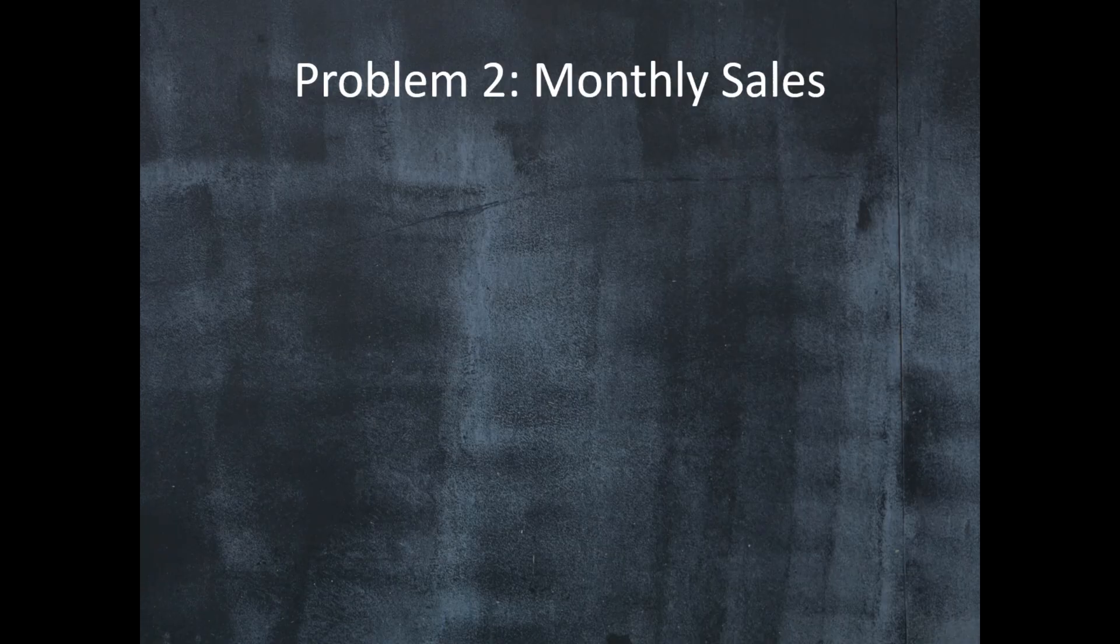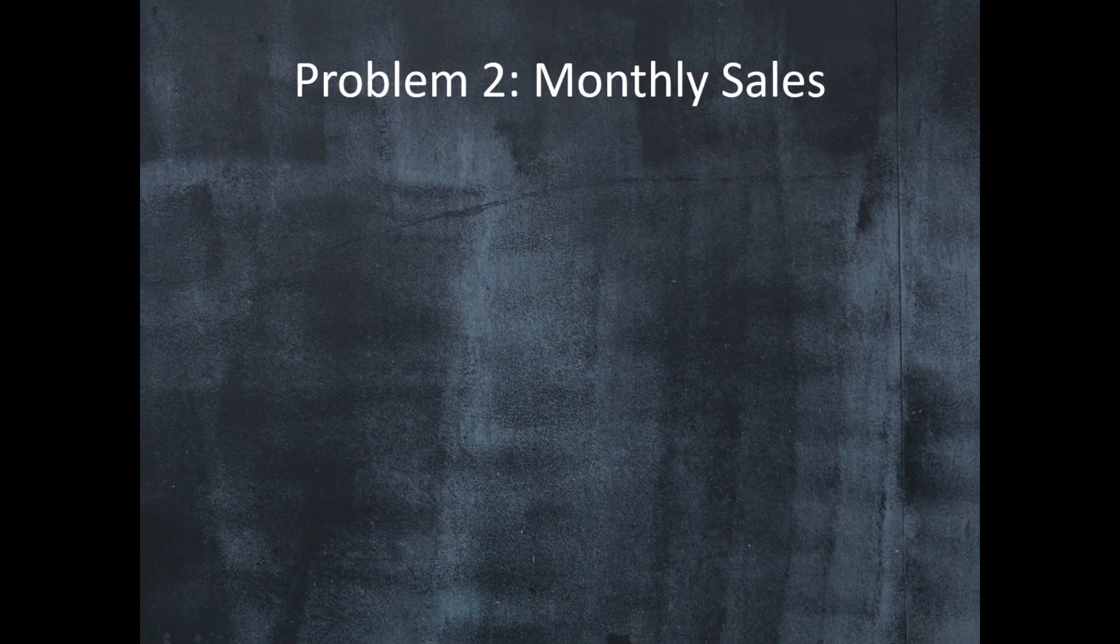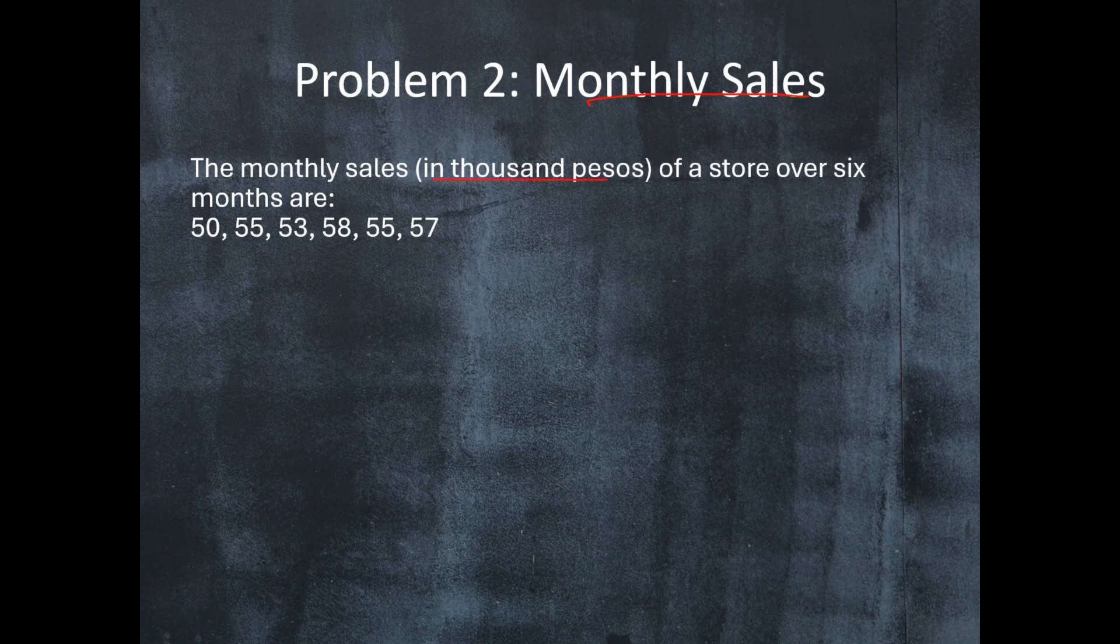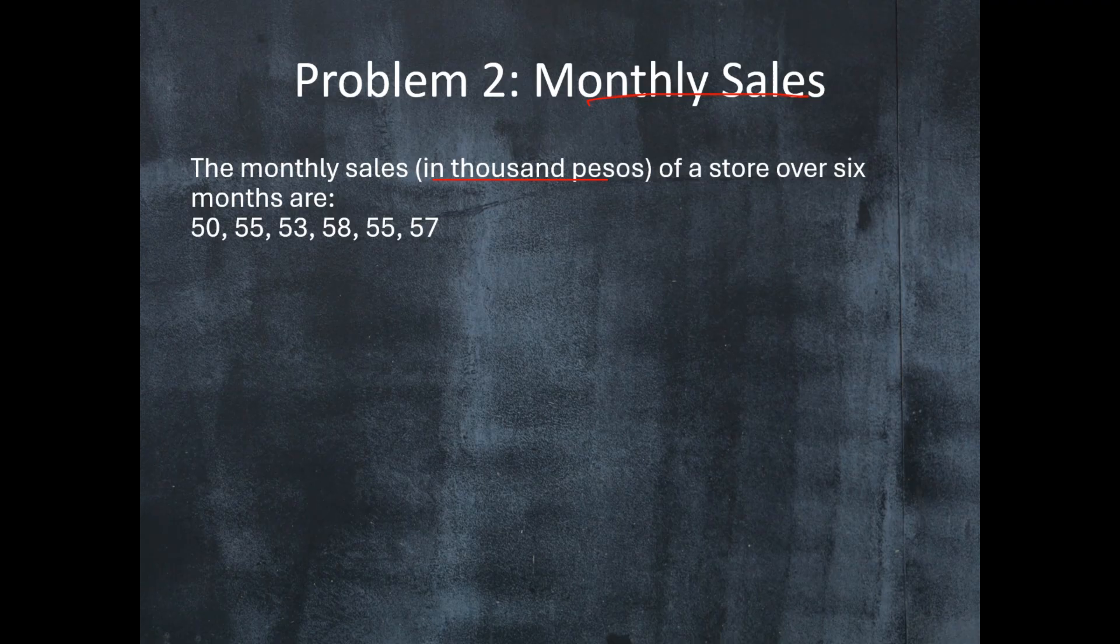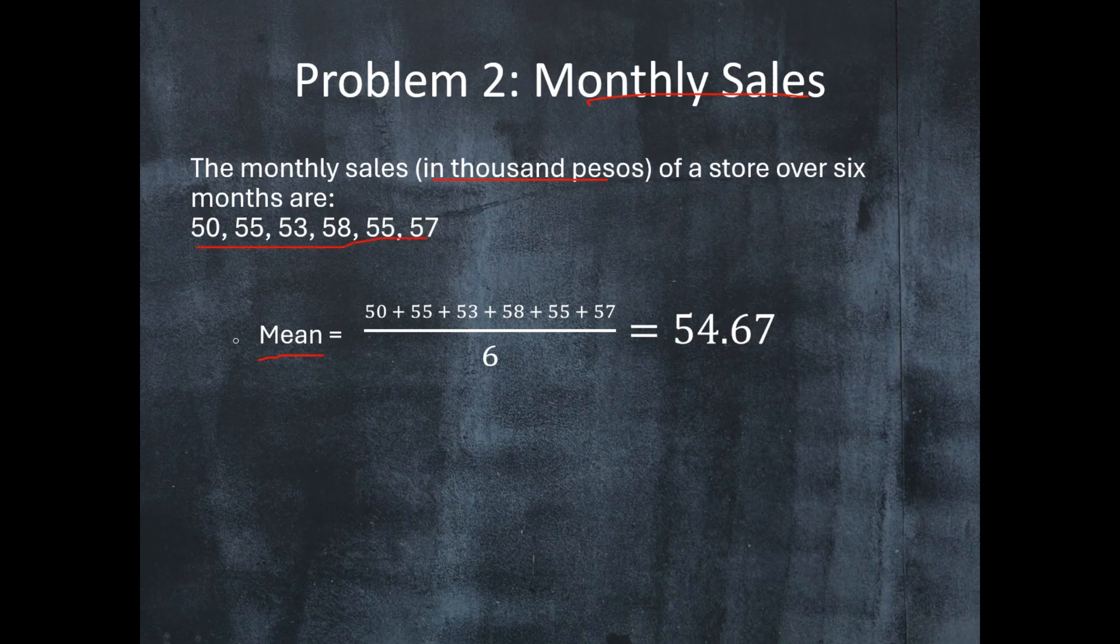Let's have another problem, and this time it's about monthly sales. The monthly sales in thousand pesos of a store over six months are: 50,000, 55,000, 53,000, 58,000, 55,000, and 57,000. The mean for this data set is 54.67.